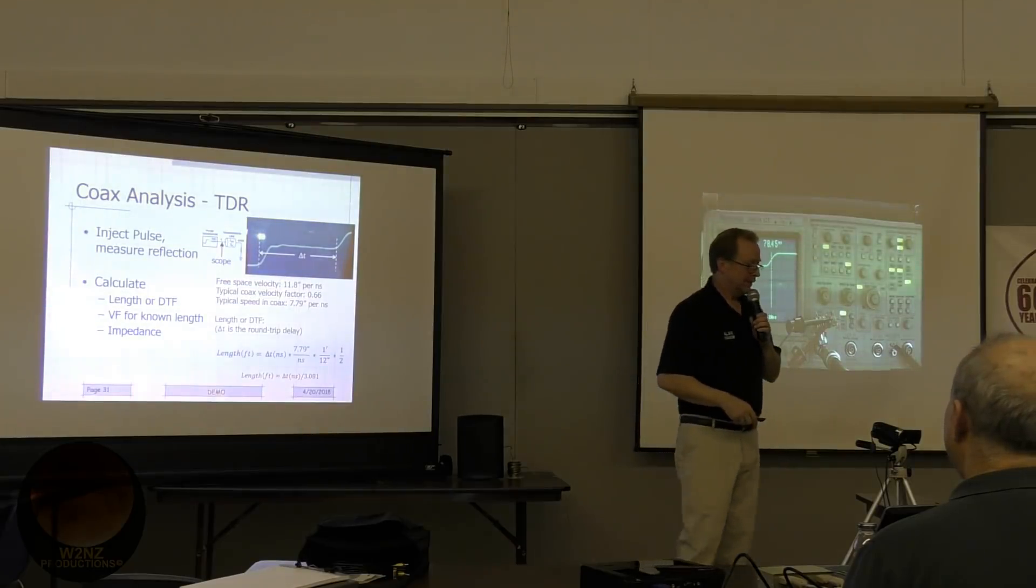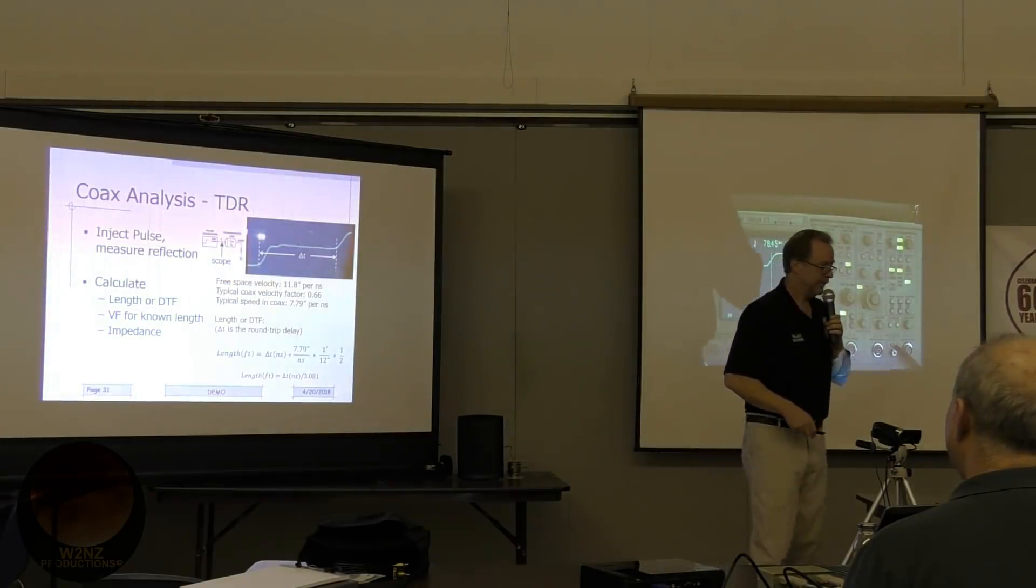If you had an unknown piece of coax, you could also figure out its velocity factor. If you don't know what the velocity factor is but you measure its length, then you can figure out its velocity factor by running the numbers around. Because they also change over time, especially if stuff gets grody.